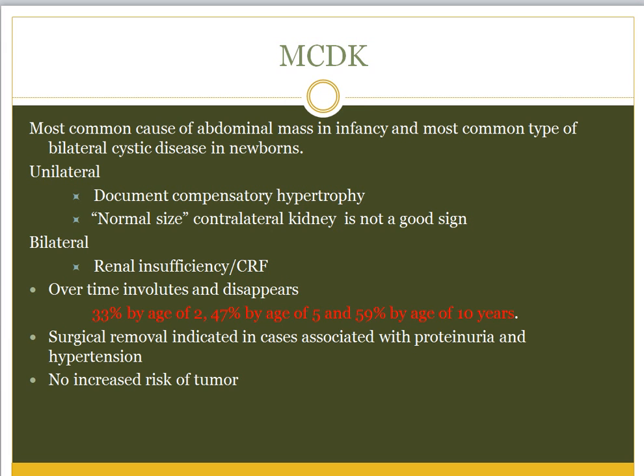MCDK is one of the most common causes of abdominal mass in infancy and the most common type of bilateral cystic disease in newborns. Unilateral is more common. When present, the normal kidney undergoes compensatory hypertrophy — if you don't see hypertrophy in the normal kidney, it should raise concern about whether that kidney is truly normal. When bilateral, kids will have renal insufficiency right at birth and sometimes may not survive.